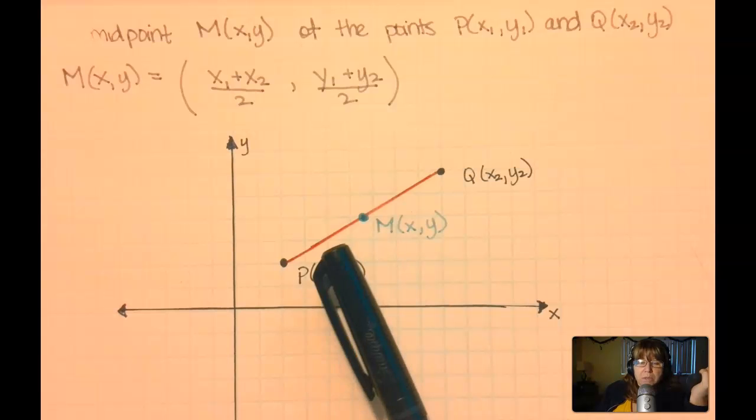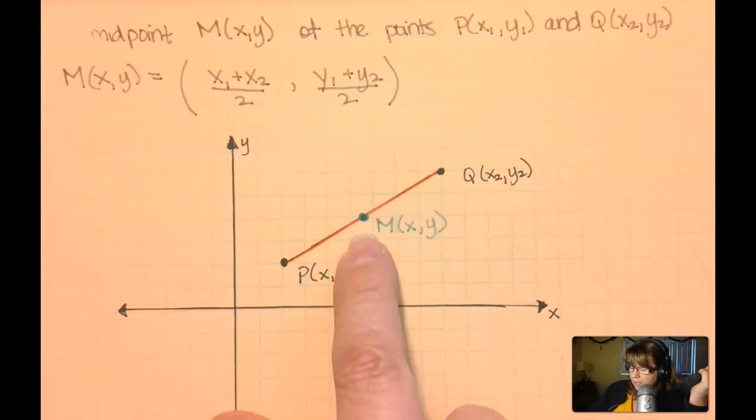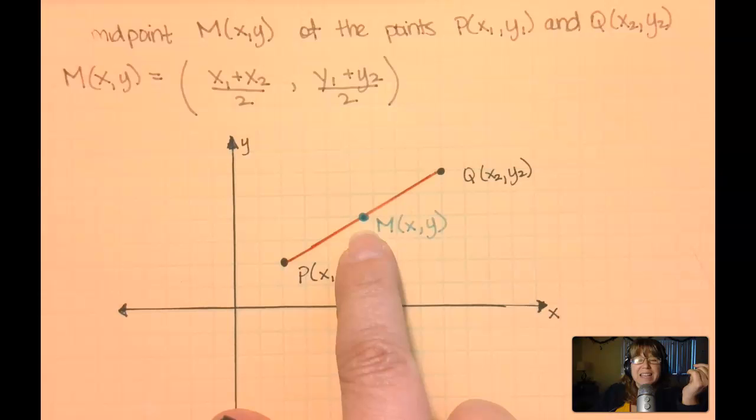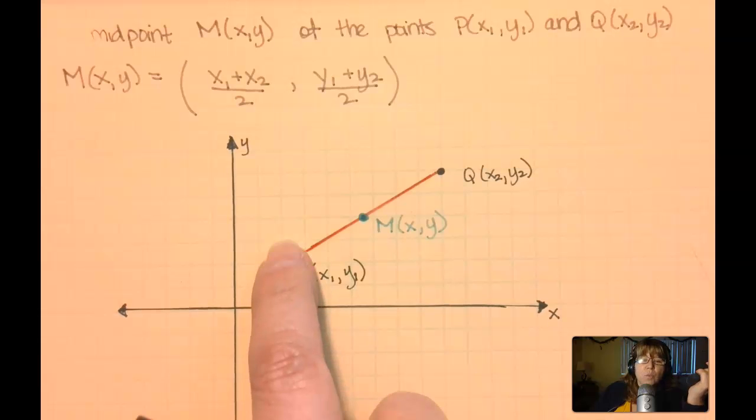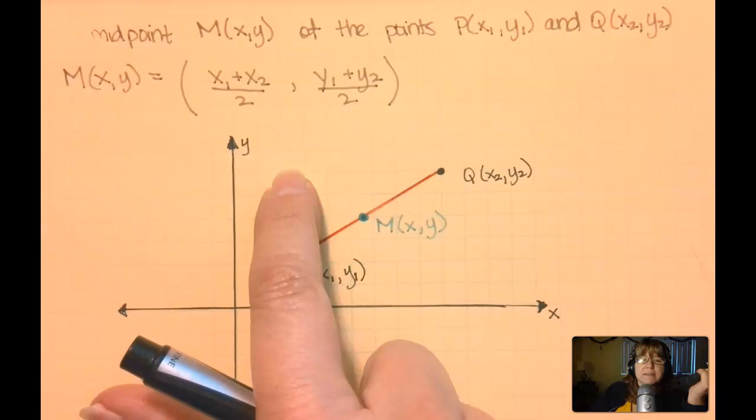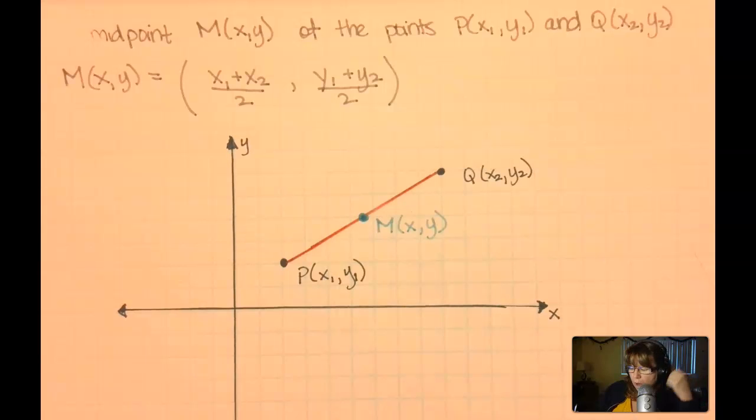Well the midpoint would be the middle way on the line. And so I've guesstimated where the middle of this line is visually looking at it. So it's halfway on the x's and halfway on the y's. And so if we figured out the halfway point between the x's and halfway point between the y's, here's what I mean.